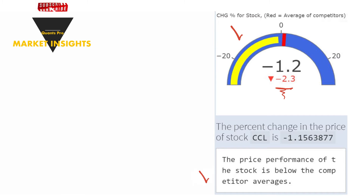It can be said that the company, which is exposed to market conditions including its competitors, differentiates relatively positively in this respect. If red exceeds yellow, the firm's performance is below competitor averages. This is a situation that involves risks about the future of the stock.